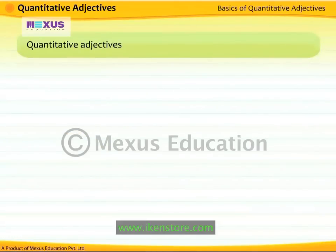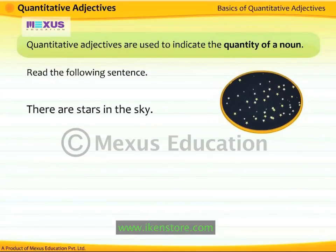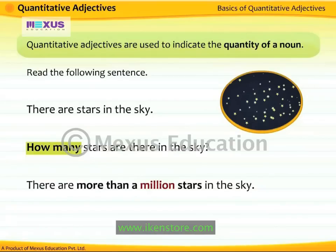Quantitative adjectives are used to indicate the quantity of a noun. Consider the sentence 'There are stars in the sky.' How many stars are there? There are more than a million stars in the sky. The word 'million' answers the question 'How many?' — hence 'million' is a quantitative adjective.